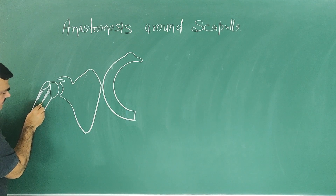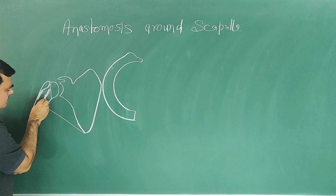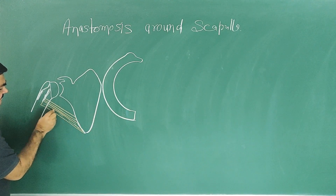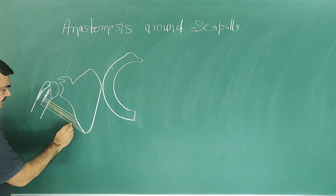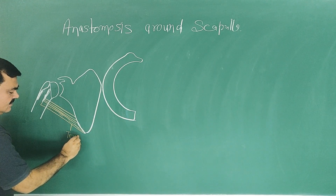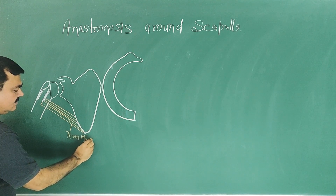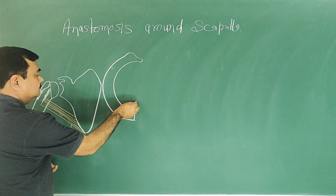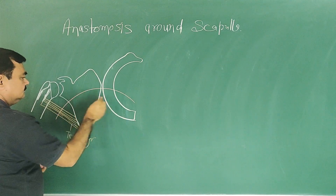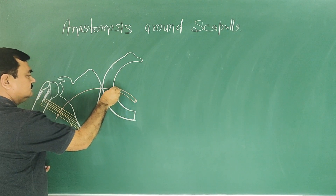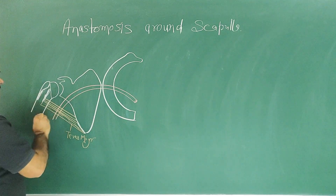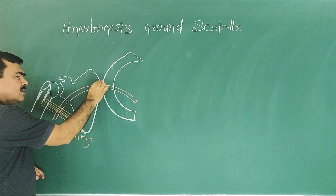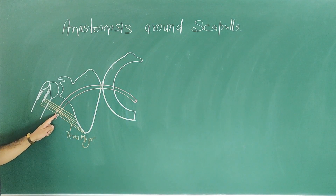What muscle is attached here? This muscle is Teres Major. This is the axillary artery. As you know, it extends from the outer border of the first rib to the lower border of Teres Major.